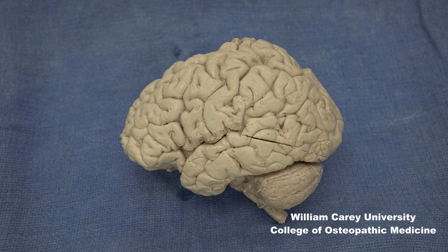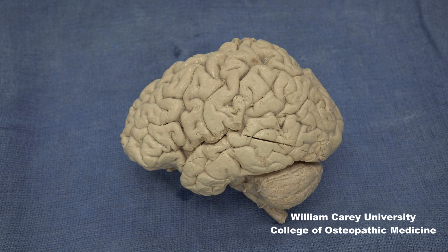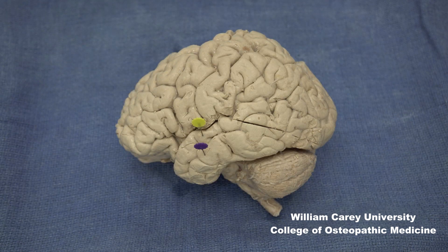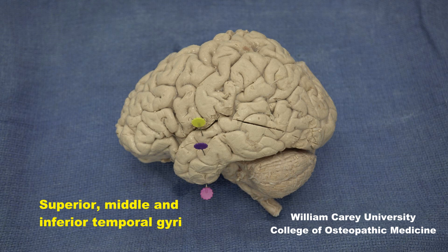Let us look at the temporal lobe quickly from the lateral perspective. As we discussed earlier, the temporal lobe is inferior to the lateral occipito-cerebral fissure and anterior to the preoccipital notch. Here we find three horizontally oriented gyri: the superior, the middle, and the inferior temporal gyrus. Note that the inferior temporal gyrus transitions inferiorly and medially into the ventral surface as well.